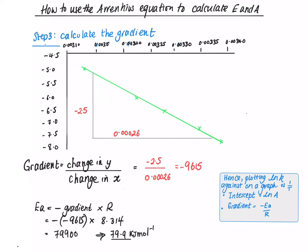R, the ideal gas constant, is 8.314. So from this, we get Ea is 79,900. So the Ea, the activation energy, is 79.9 kilojoules per mole.